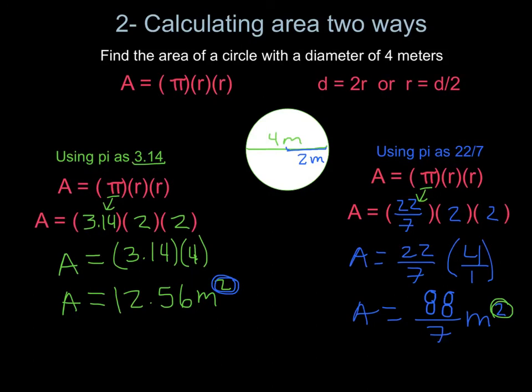So here's how you were able to do the area two different ways. Remember, we will tell you which way we would like you to do it, whether it is with 3.14 or 22 sevenths, but make sure that you remember that if you're given the diameter to still find the radius when finding area. Thanks for all your hard work, guys. We'll see you tomorrow.